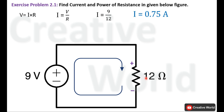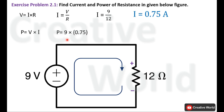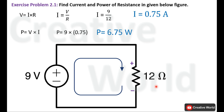Now we will calculate the power dissipation of this resistance. Voltage across this resistance is 9 volt because of the parallel connection and current through this resistance is known, so we use P equal to V multiplied by I. Entering the values: P equal to 9 volt multiplied by 0.75 ampere. The power of the 12 ohm resistance is 6.75 watt, and because of the positive sign, the 12 ohm resistance is dissipating 6.75 watt.